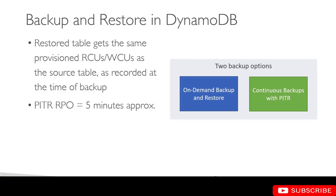When you use PITR, the RPO is approximately five minutes. This means that when you enable continuous backups with PITR, the latest restorable time can be at least five minutes in the past. So you can restore to any second in the past 35 days, but the maximum amount of data loss would be about five minutes. RPO stands for recovery point objective — it designates the amount of data loss time. An RPO of about five minutes means you can lose a maximum of five minutes of data.